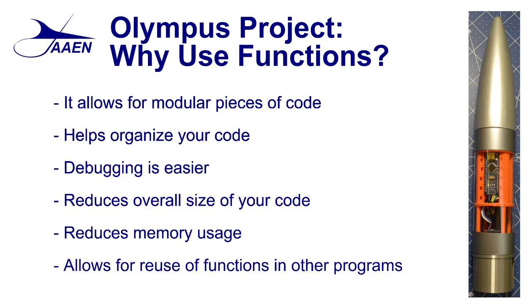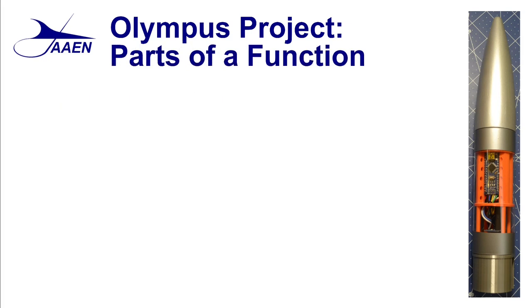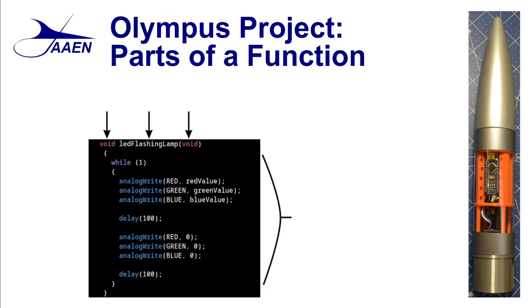So let's take a look at what a function is. The first thing we want to do is look at the parts of a function — there are basically four parts. The first part is the return type. In this case, we're looking at a function which flashes an LED lamp in the Olympus project and it doesn't return anything, so the return type is void. If you wanted to return an integer or something like that, you would have that listed here. The next thing is the name of the function — it should be specific to the function, it has to be unique, and this is the same name we're going to use when we call this function from other areas of the program.